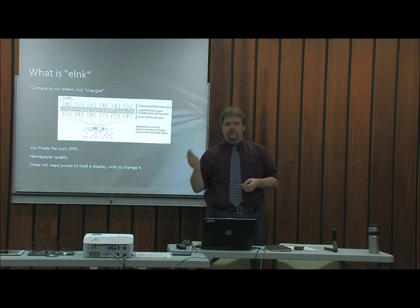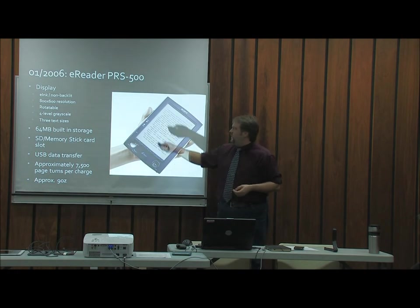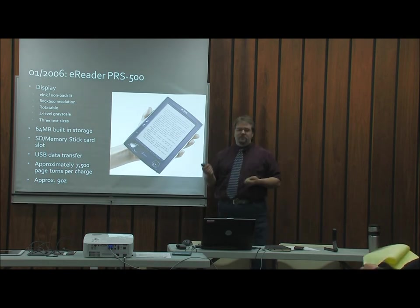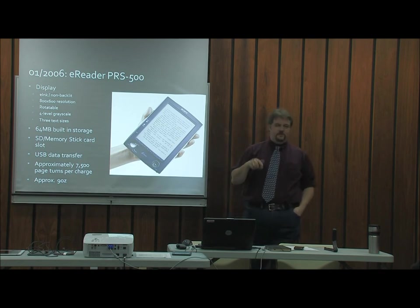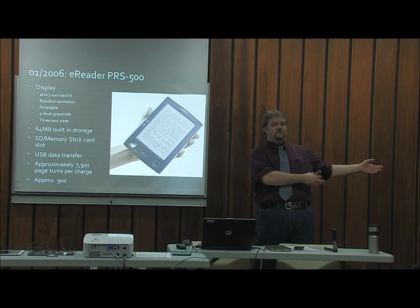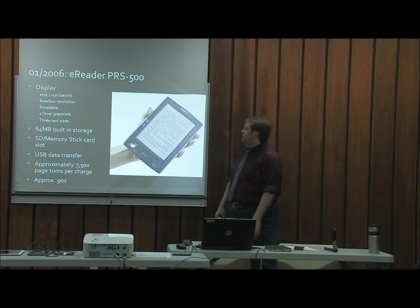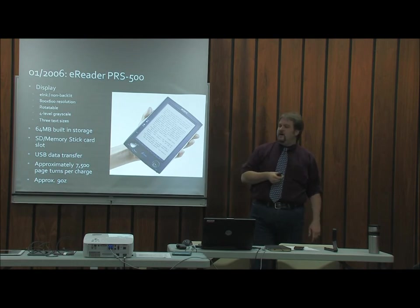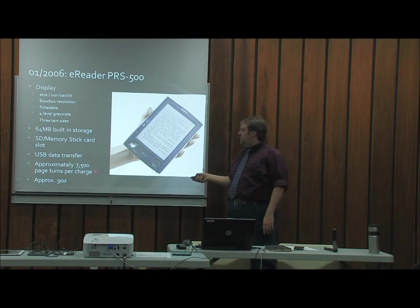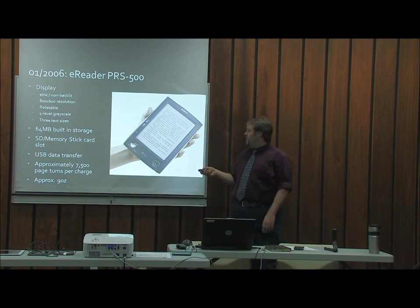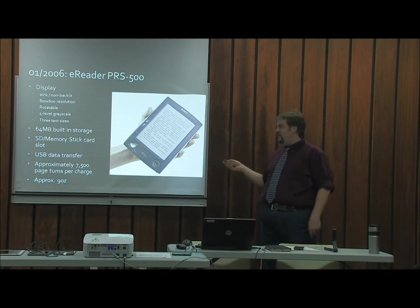The Sony Reader PRS500 was the first e-ink based e-reader in the U.S. E-ink, 800 by 600 resolution, four levels of grayscale, three text sizes, 64 megabytes of built-in storage — so we're talking a couple hundred copies of a novel. It also had slots for memory cards to expand storage, transferred content via USB, and battery life was now measured in page turns — about 7,500 page turns per full charge. It weighed only about nine ounces. I actually have one of these.